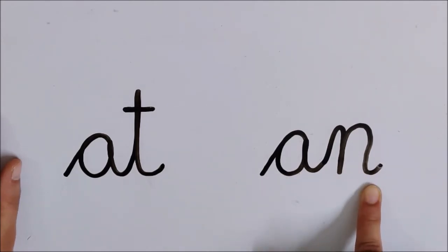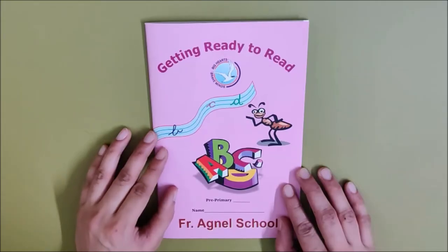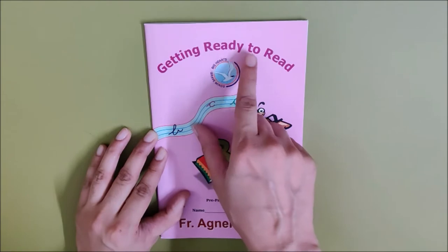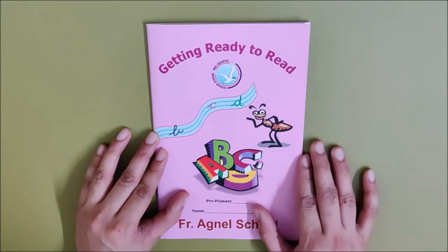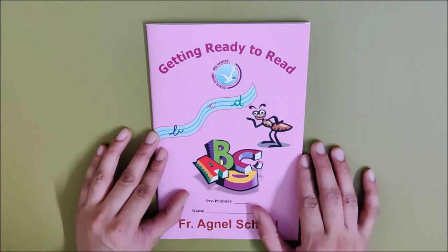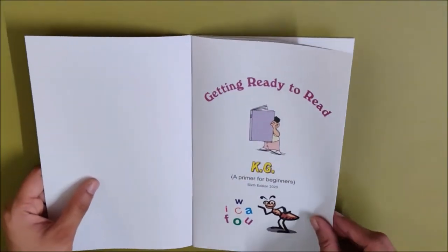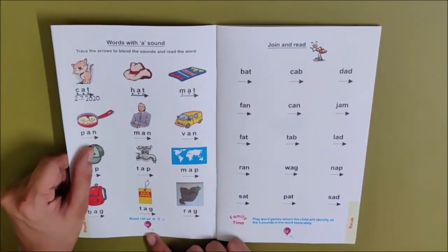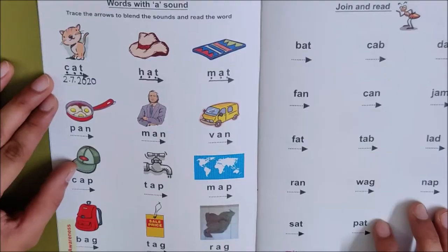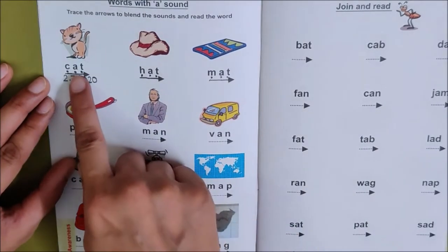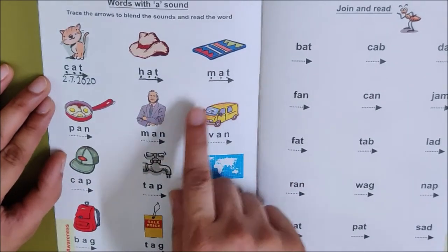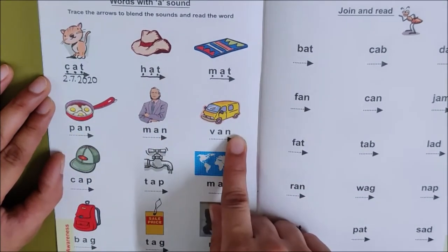And for reading, you need your English reader. What is the name of your reader, children? Getting Ready to Read. So take your reader and open page number 2. I am opening my reader and I have opened page number 2. Yesterday we did reading of these words: at, mat. Today we are going to read the next row of words.